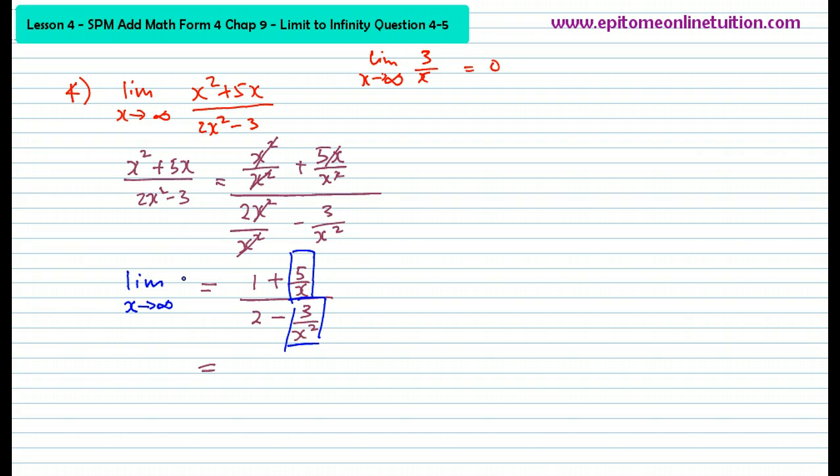So now you may write: limitation of x approaches infinity for the function 1 plus 5 over x over 2 minus 3 over x squared. You must always write this. You cannot just write limit x approaches infinity equals to and then write your answer. The function must always come next to the limit. Now you know that 5 over x is 0, so it is actually 1 plus 0. You also know that this is 0. So that's 2 minus 0. So you get 1 over 2. And that is your answer.